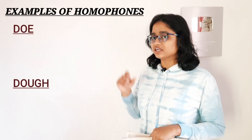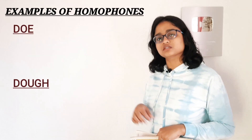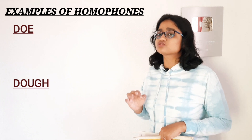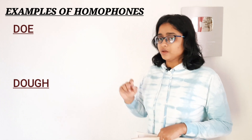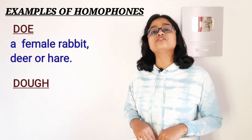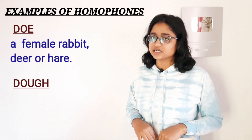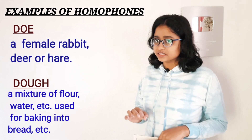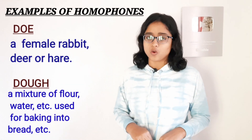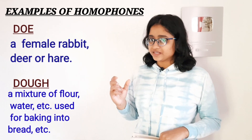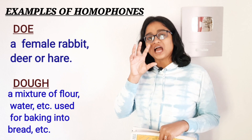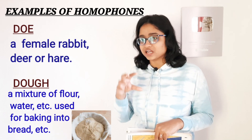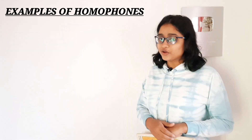For example, have a look at these two words. Both are pronounced 'doe,' but the first one means a female deer and the second one means a paste of wheat flour — that paste of wheat flour is called dough.